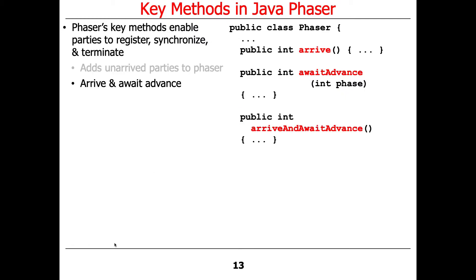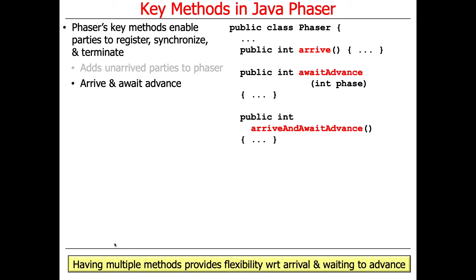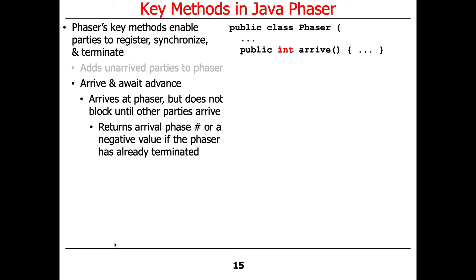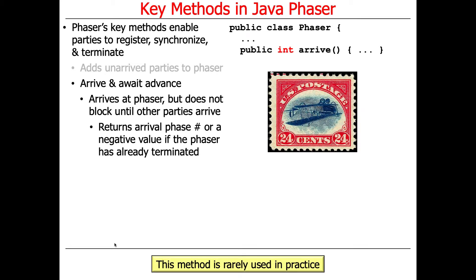There are methods used to arrive, await advance, and arrive-and-await-advance. The arrive() method arrives at the phaser but doesn't block until the other parties arrive — it's like saying, 'I'm here, but I'm going to go get a Coke.' It returns the arrival phase number, or a negative value if the phaser has already been shut down. This method isn't very commonly used.